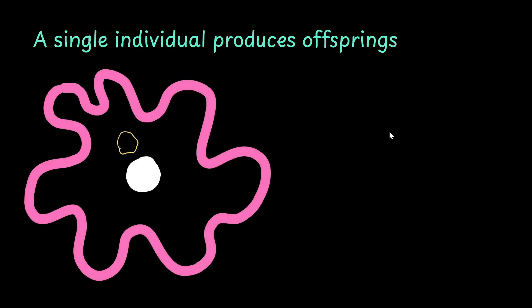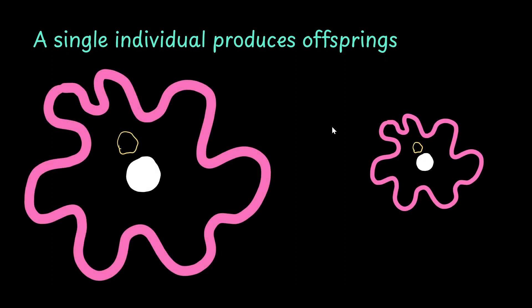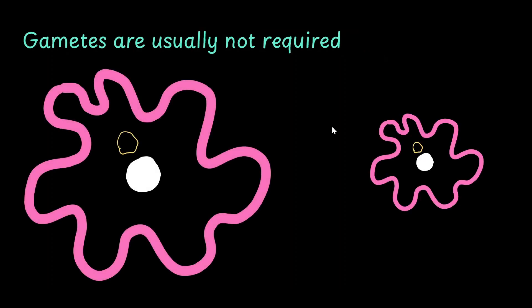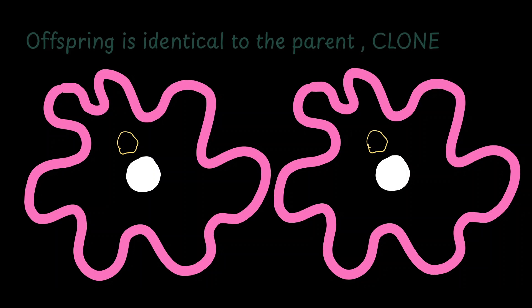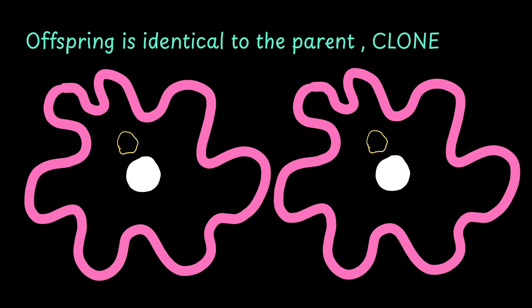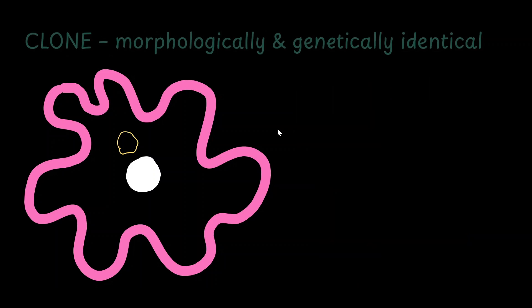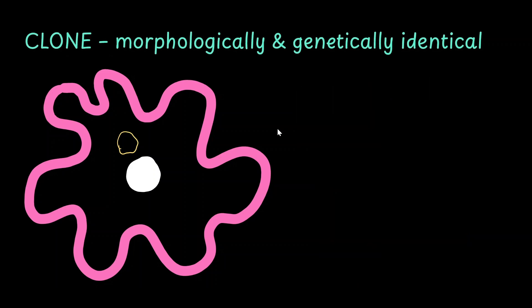In protozoa, only a single individual is enough to produce an offspring. So because you don't need two parents, you don't need gametes in order to produce a progeny. When the progeny grows up, they are often very identical to the parent that we can use the term clone to describe them.